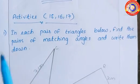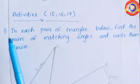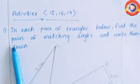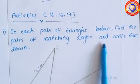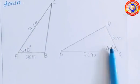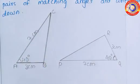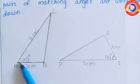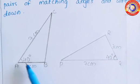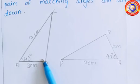Using this idea, let's do the activity question in your textbook, page numbers 15, 16, and 17. The first question is: in each pair of triangles below, find the pairs of matching angles and write them down. In triangle ABC, angle A is equal to angle Q because both the angles are 40 degrees each.